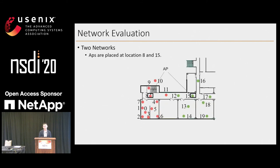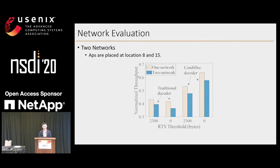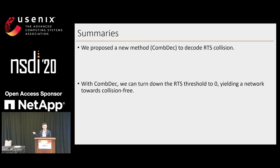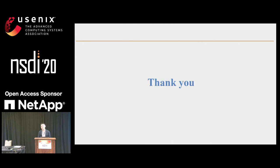We also evaluate the true network performance, and again CobDeck is better than the traditional one. In summary, we propose a new method called CobDeck to decode RTS collision. With CobDeck, we can even turn down the RTS threshold to zero to generate a network towards collision-free. Thank you very much.